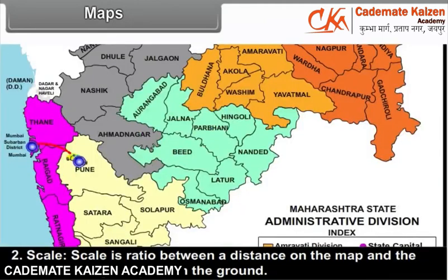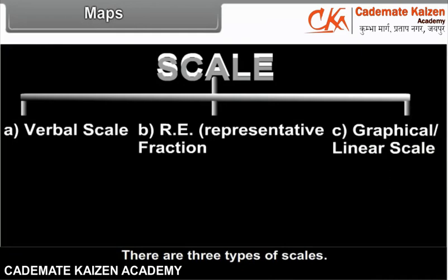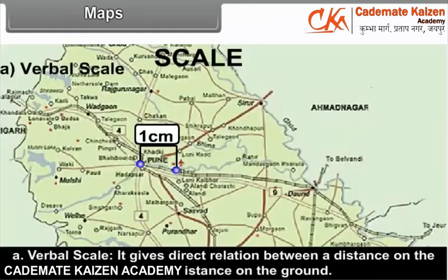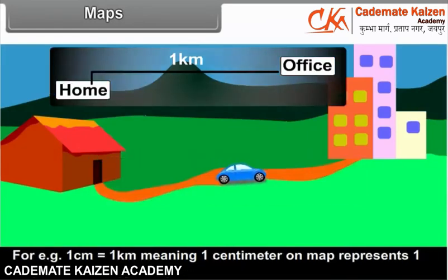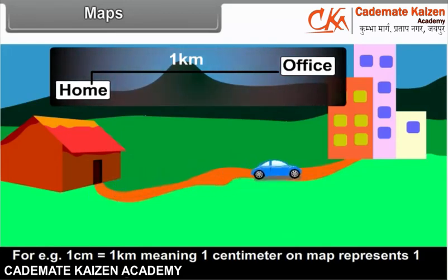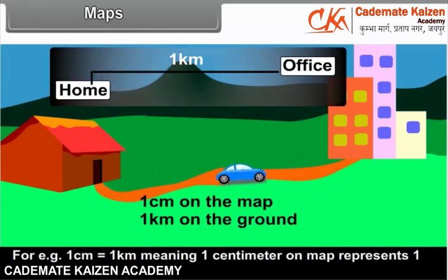Scale is a ratio between a distance on the map and the corresponding distance on the ground. There are three types of scales. A: Verbal scale — it gives direct relation between a distance on the map with corresponding distance on the ground. For example, 1 cm is equal to 1 km, meaning 1 cm on the map represents 1 km on the ground.